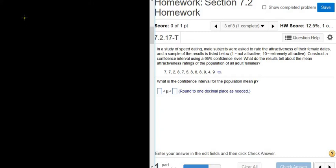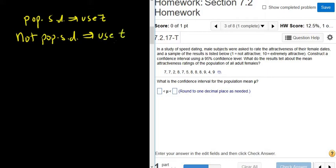So remember, if you're given the population standard deviation, you use z. And if you're not given the population standard deviation in these problems, you use t. So we're going to use t.